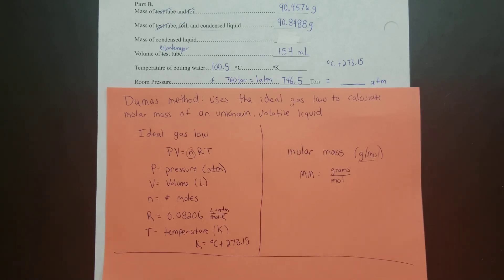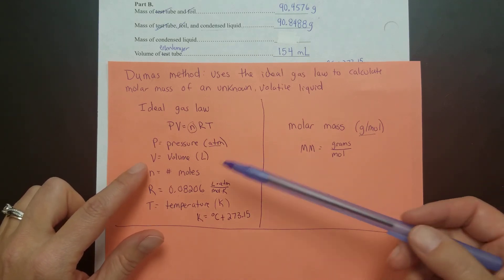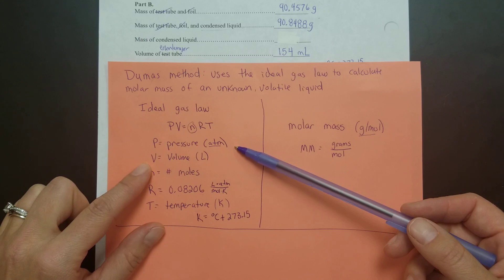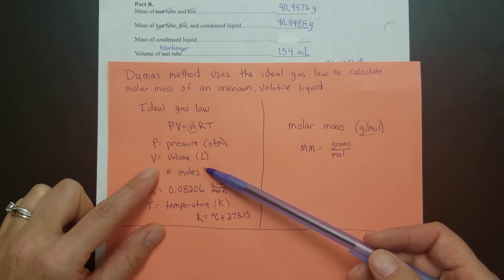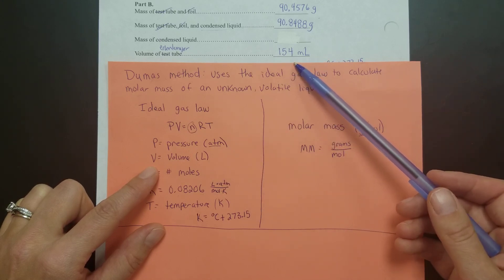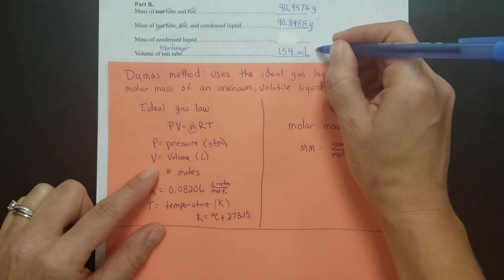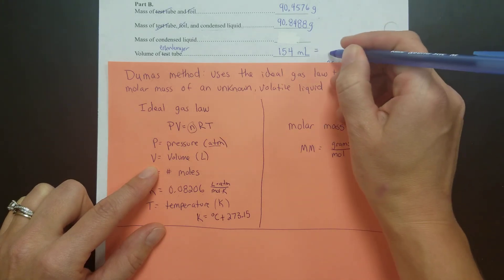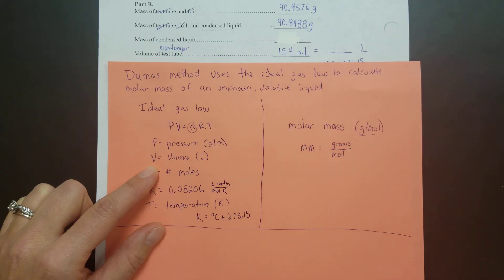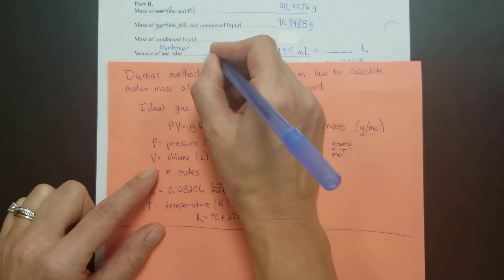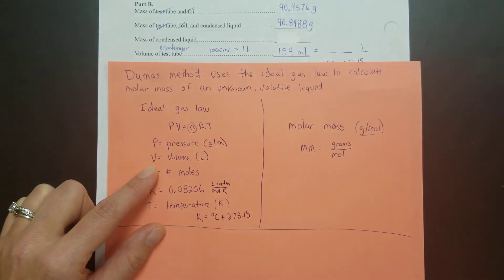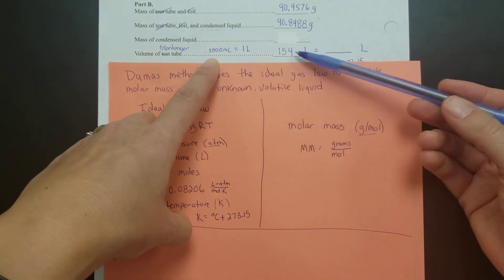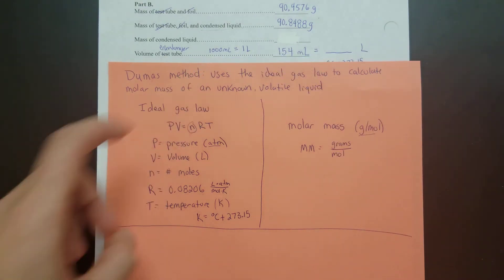Going back to volume for a moment: while checking that all units match what the ideal gas law requires, note that volume needs to be in liters, but the volume was given in milliliters. You will need to convert 154 milliliters to liters using the conversion factor where 1,000 milliliters equals one liter. Using dimensional analysis, dividing 154 by 1,000 gives you your volume in liters.